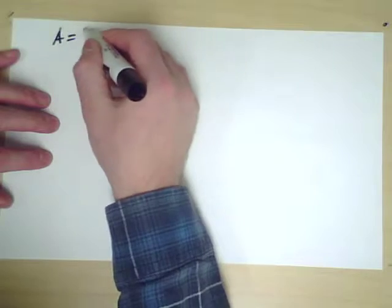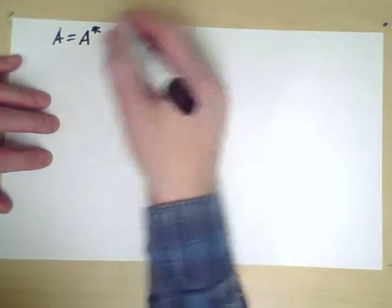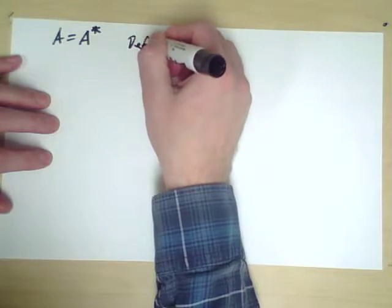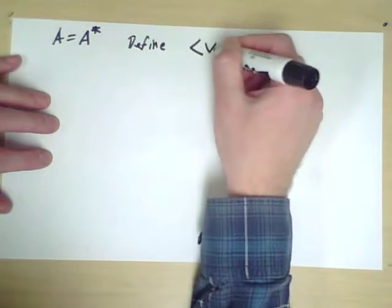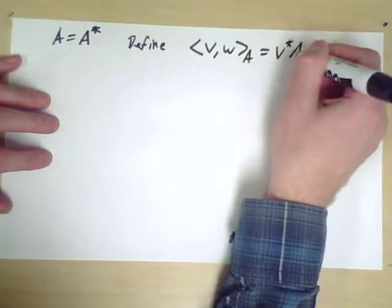So if A satisfies A equals A star, A is our Hermitian matrix, then define the inner product of V and W sub A as V star A W.